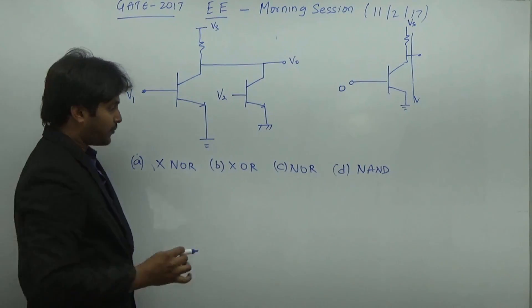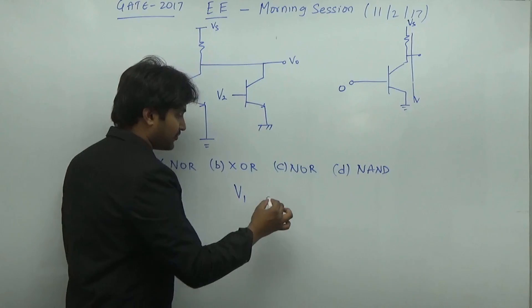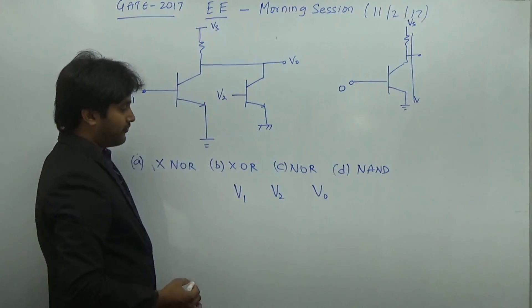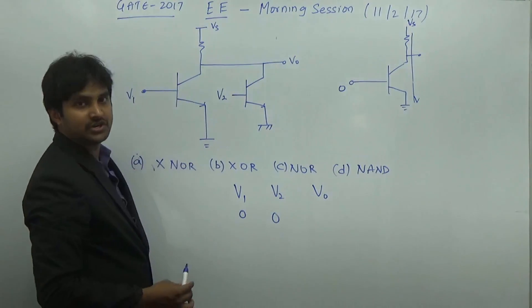Now, how to answer this particular question? I am going to consider different possibilities of V1 and V2 and find the V0. First of all, I will take both my inputs as 0 and 0.